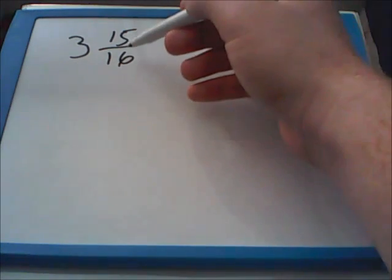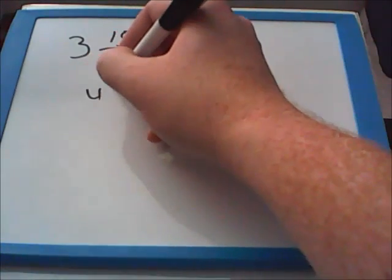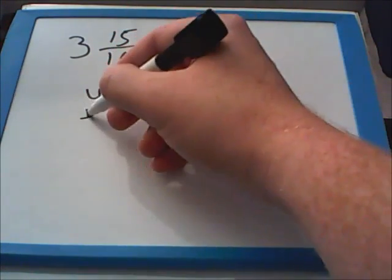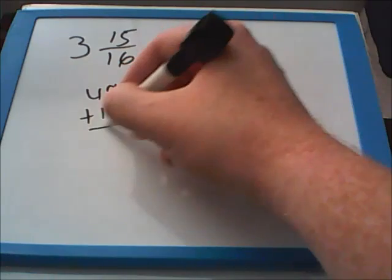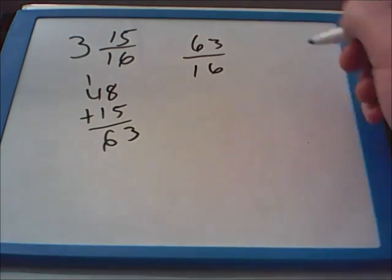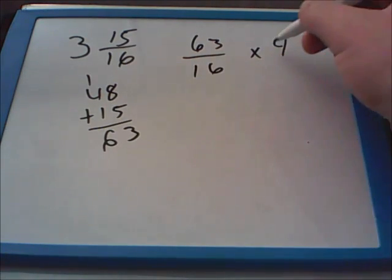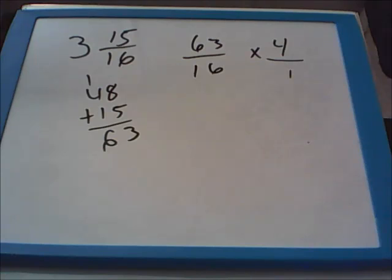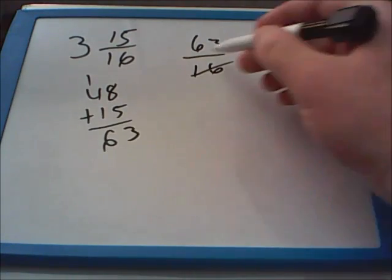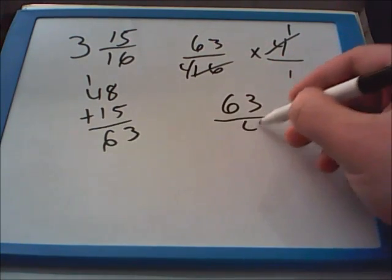So remember we will do the bottom number times the whole number: 3 times 16 and that gets me to 48, and then add the top number 15. So that I end up with 63 over 16 being multiplied times 4 because I have 4 boards. And we will put a 1 under that 4 so that we have 2 fractions being multiplied times each other. I will go ahead and do some reducing here, canceling out the 4 and the 16, so that I end up with when I multiply 63 over 4.